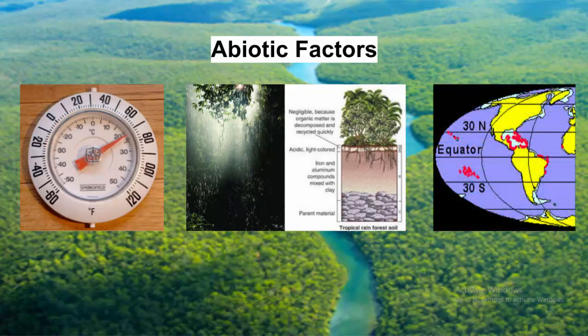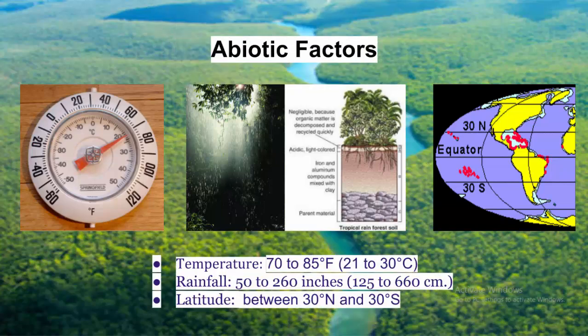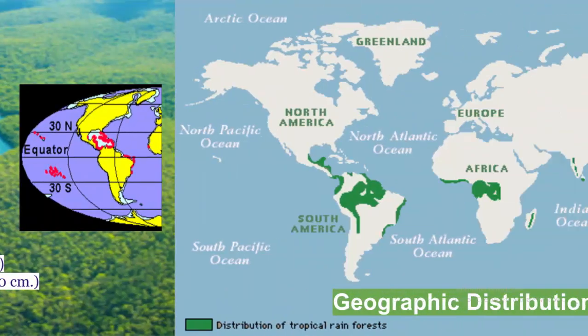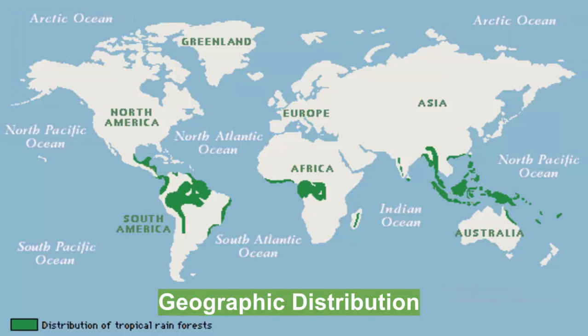A lot of the abiotic factors of tropical rainforests have to do with their location, and you'll find them between 30 degrees north and 30 degrees south in terms of latitude, so all very close to the equator. Rainforests cover about 6% of Earth's surface, and they're found in every continent except Europe and Antarctica.